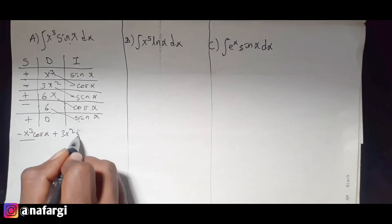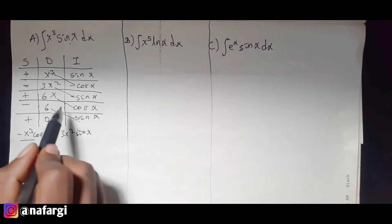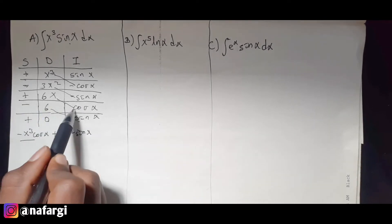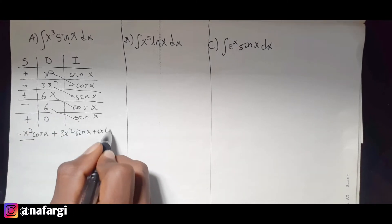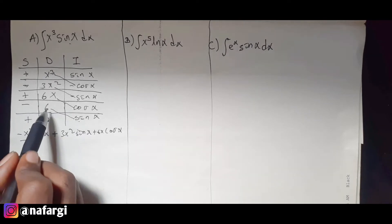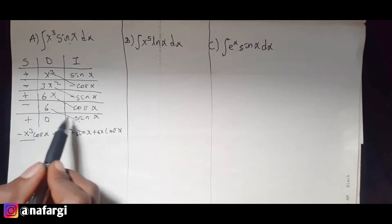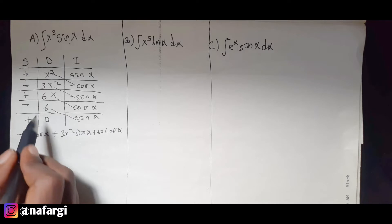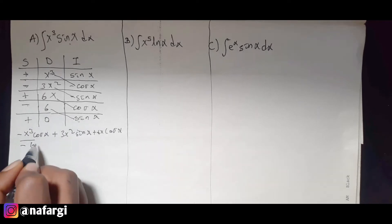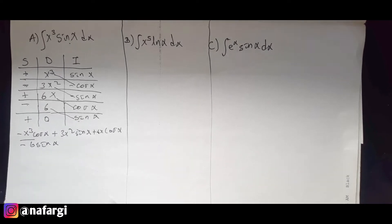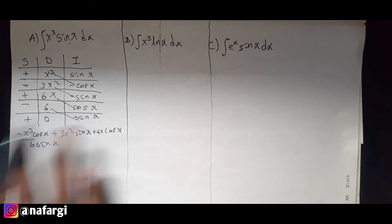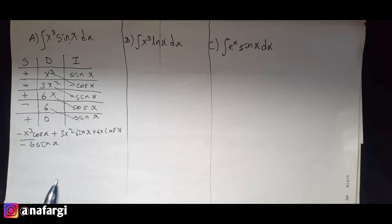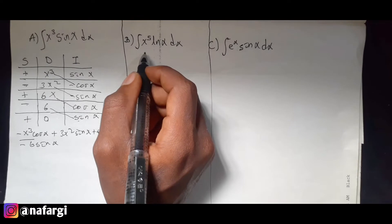This is positive x cube. This is sine x. Then the positive side will be positive. We will have 6 times plus 6x plus 6x. Then the negative side will be minus sin x. If we use the normal bi-part method, we will get the same value.